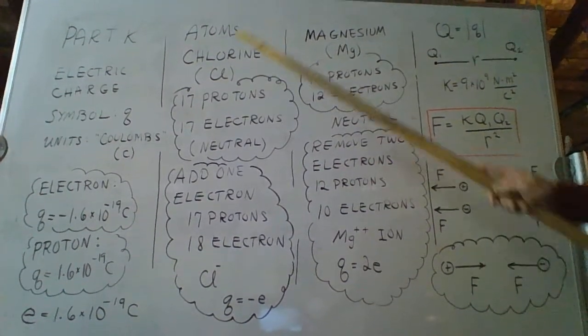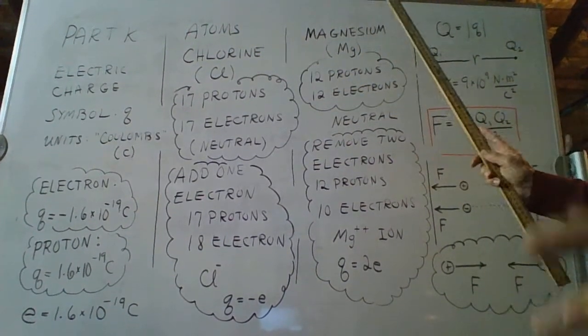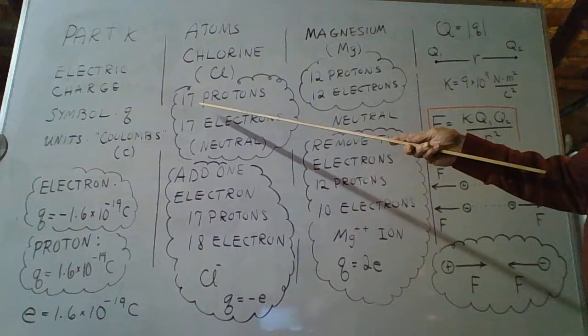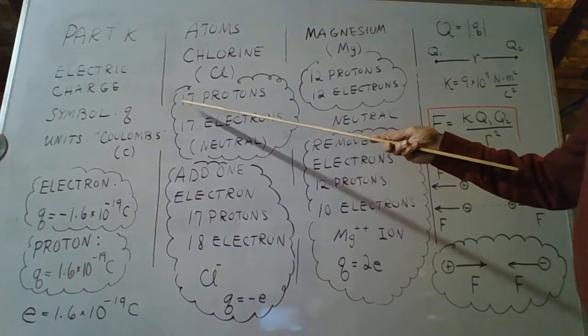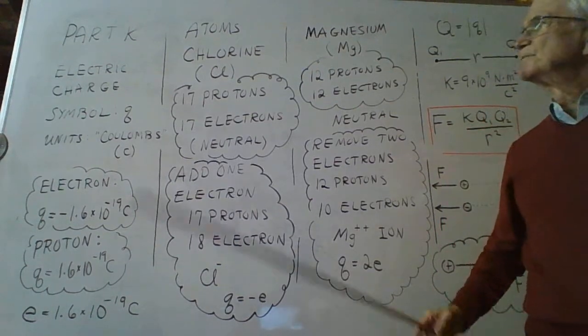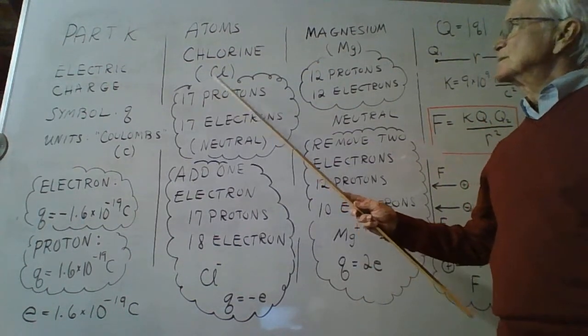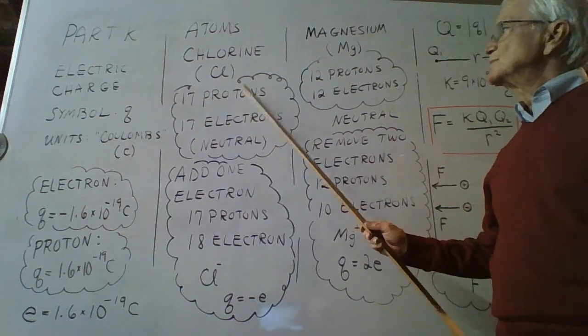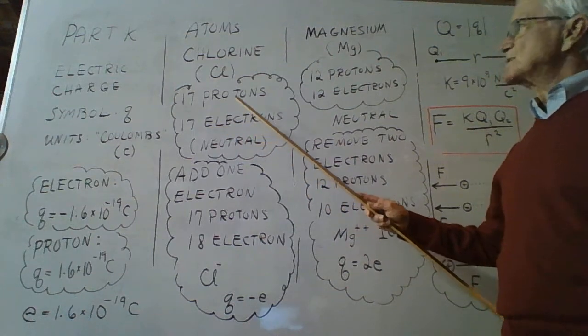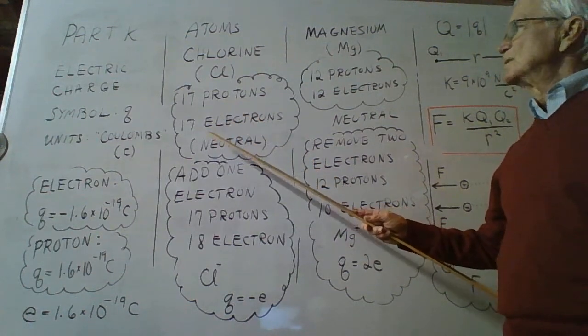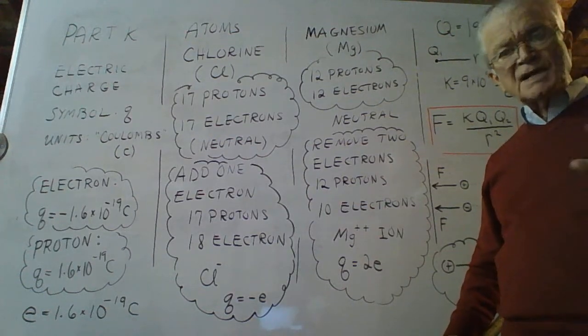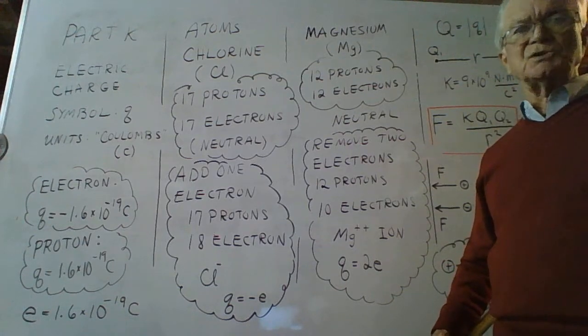Now let's talk about atoms. Why don't we talk about the atom called chlorine. It's on the periodic table in the lecture hall. It has 17 protons. It's number 17, by the way, on the periodic table of the elements. It has 17 protons in its nucleus, and orbiting the nucleus are 17 electrons. So you have 17 positive charges and 17 negative charges. You add them all up. The net charge of an atom is zero. We say the atom is a neutral object.